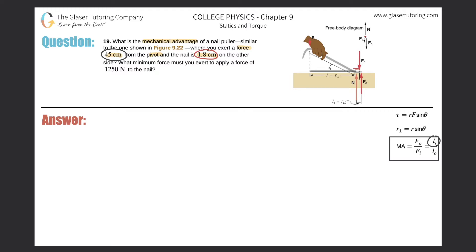They don't tell us any forces, just lever arms. The input lever arm is the 45 centimeters—the distance to the pivot point—and the output lever arm is the 1.8 centimeters, this red distance right there.